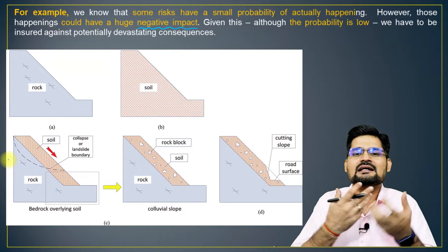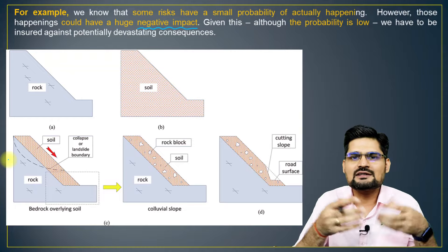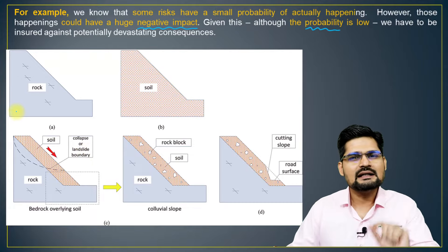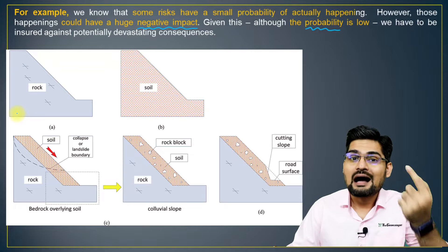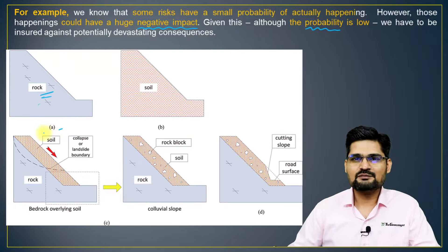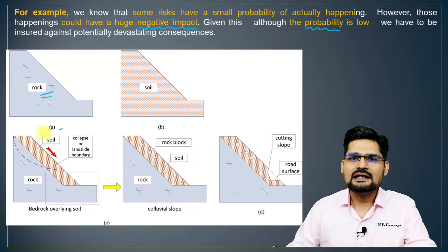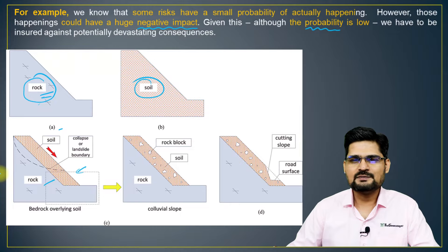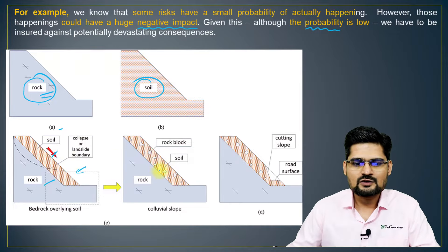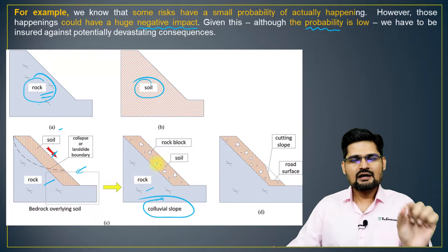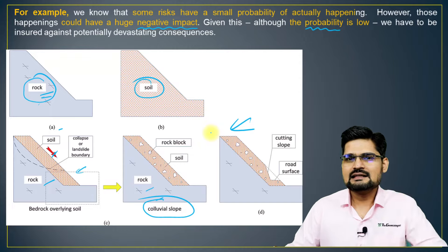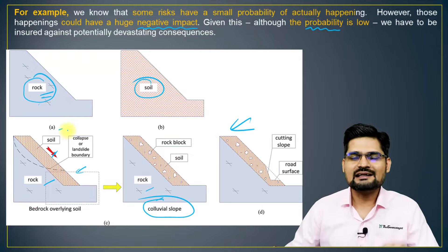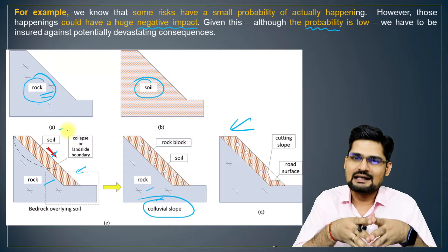Possibility is a general term for something which is not sure, not certain, but there is a chance of occurrence. When we measure that chance of occurrence, probability comes in. Even if probability is low, the impact could be high. Looking at five different slope diagrams — a barren rocky surface, a soil slope, a mix of rock and soil, a collapsed landslide with soil over bedrock, and a colluvial rock-soil debris slope — each has a different degree of probable risk for landslide.